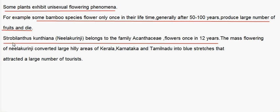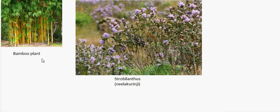Another example is Strobilanthes kunthiana. In Malayalam, it is known as Neelakurinji. They belong to the family Acanthaceae and flower once in 12 years. The mass flowering of Neelakurinji converts large hilly areas of Kerala, Karnataka and Tamil Nadu into blue stretches that attract a large number of tourists. This is Strobilanthes and this is the bamboo plant — they flower, produce fruits, and then die. Neelakurinji produces flowers once in 12 years.